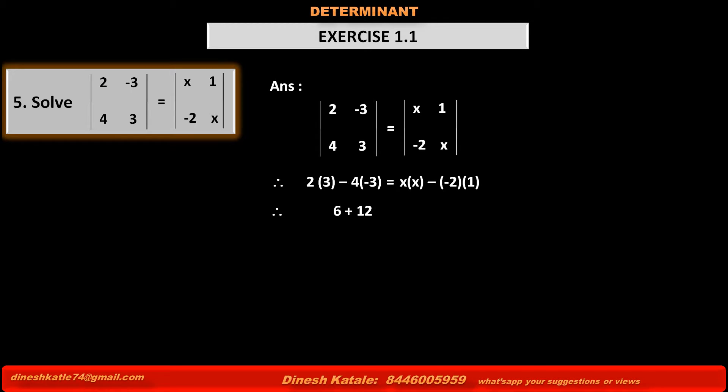Therefore, 2 3s are 6, then minus minus plus and 4 3s are 12, 6 plus 12 is equal to x into x, x square minus minus plus and 2 1s are 2, x square plus 2. Therefore, 18 is equal to x square plus 2.